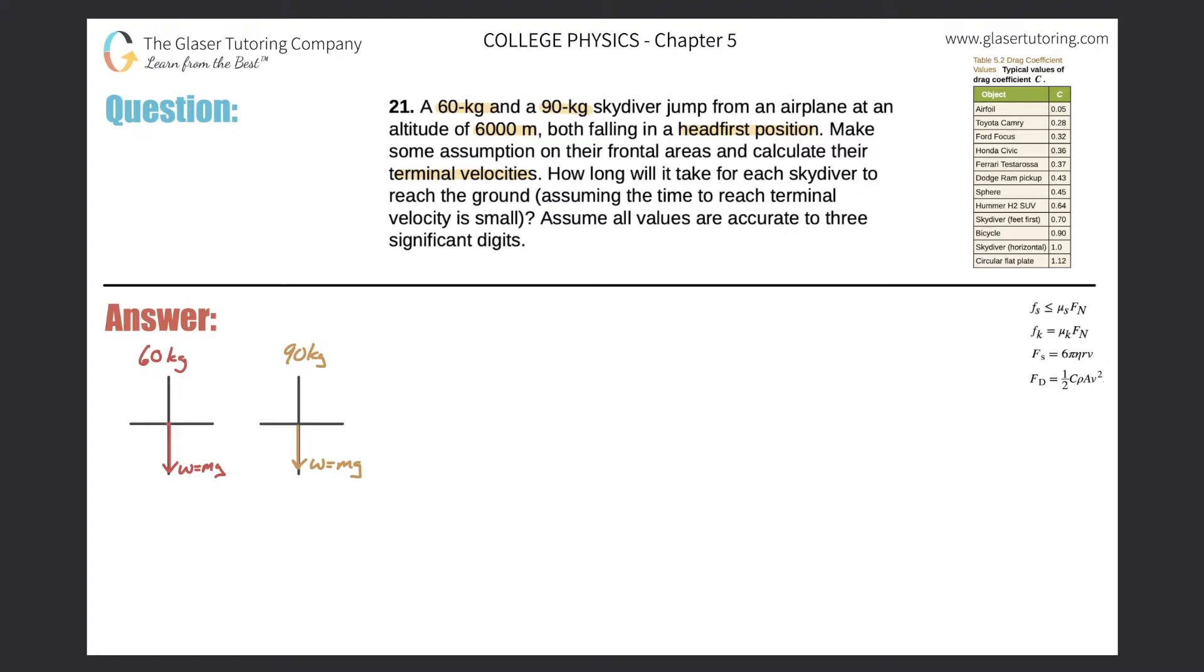That's fairly straightforward. Now remember their weights are a function of their mass. So I can calculate the weight of each of these individuals. The weight here should be 60 times 9.80, so 588 newtons. And then we can also do the same thing here for the 90-kilogram person. So it's 90 multiplied by 9.8. The weight now of the 90-kilogram person will be 882 newtons.